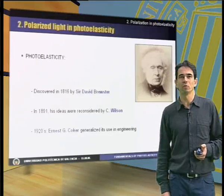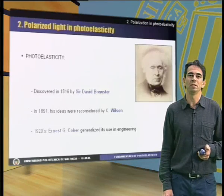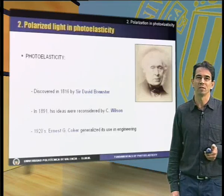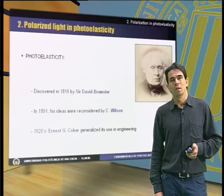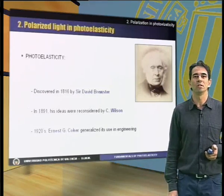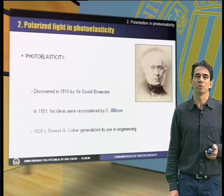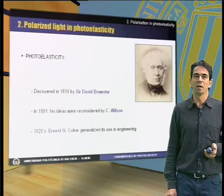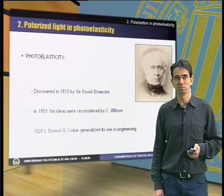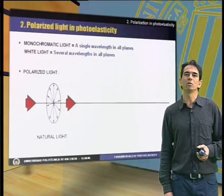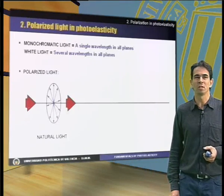Polarized light in photoelasticity. This experimental phenomenon was discovered by Sir David Brewster in 1816, who observed that when a loaded glass part is illuminated by polarized light, a pattern of color fringes appears. These color fringes are caused by the stresses in the mechanical part. In 1891, his ideas were further considered, and in the 1920s Ernest Cocker generalized their use with many applications in mechanical engineering. The phenomenon is based on the polarization of light combined with the use of a birefringent material.